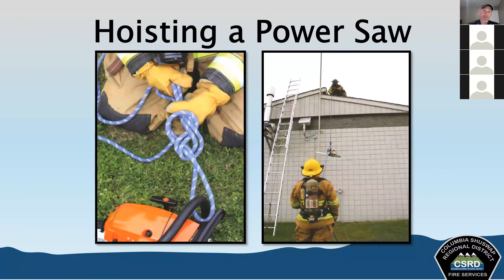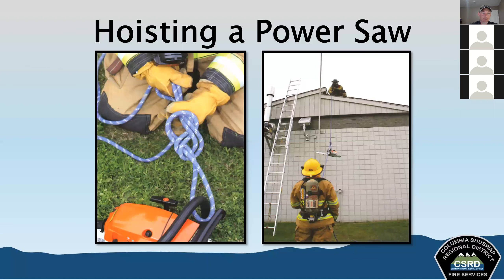For hoisting a power saw, secure the rope to the handle using a figure eight on a bight — tying the figure eight with the bight around the handle of the saw. Leave enough excess at the running end to use as a guide or tagline, then simply hoist the saw. The tagline person uses the running end at the bottom, while the person at the top uses the working end, with the saw in the middle of the standing part.